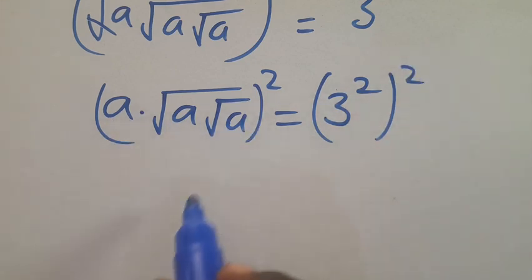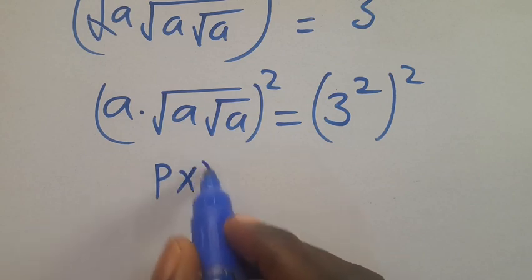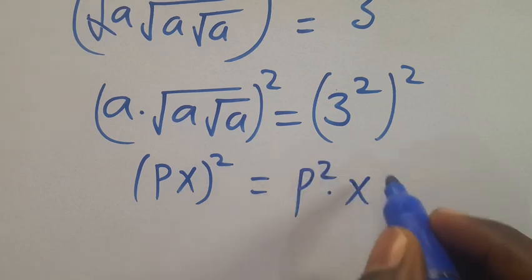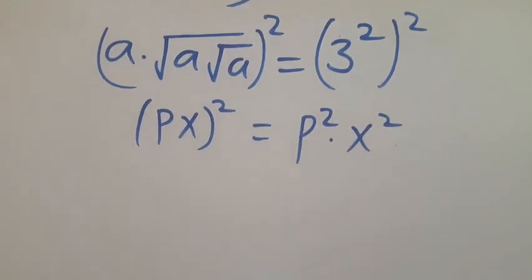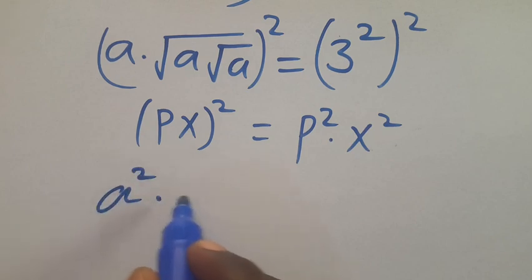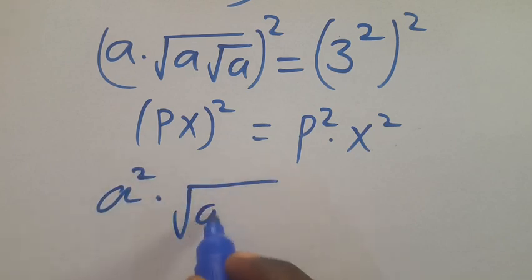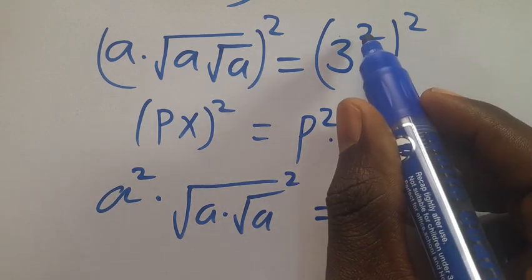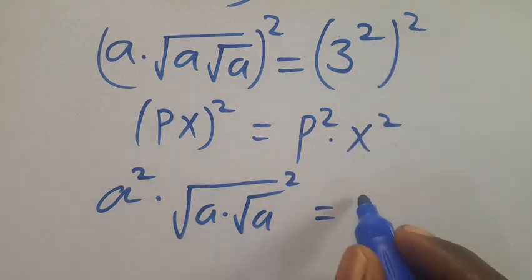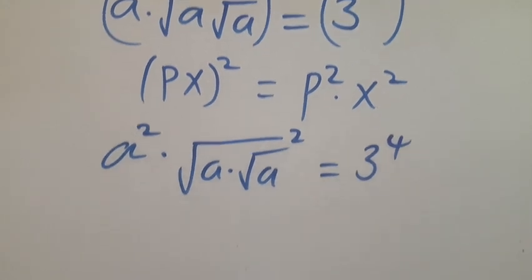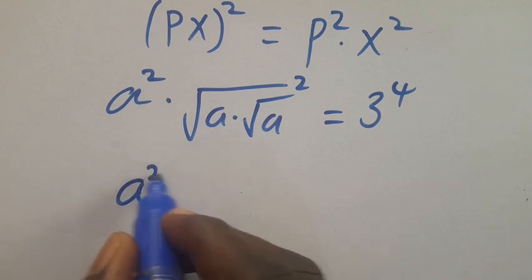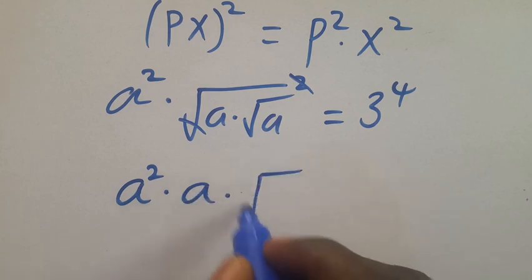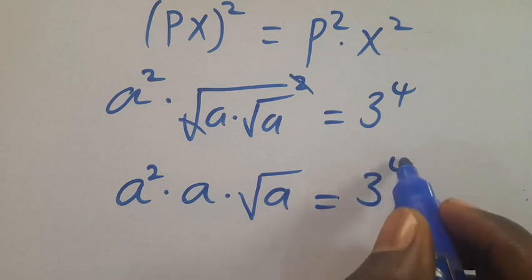From here let's square it again. We apply the rule (px)² = p² · x², so we have a squared multiplied by root of a into root of a, all to the power of two, equals three squared squared, giving us the right side to the power of four. Cancelling, we get a multiplied by root of a equals the right side to the power of four.